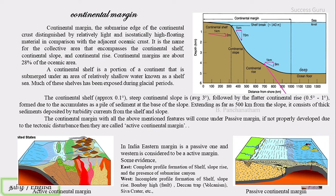A submarine canyon may form during glaciation when a river crosses the continental shelf and runs down the continental slope, forming a U-shaped deep valley. There are many submarine canyons in the Bay of Bengal side of the continental slope. On the western side, there is incomplete formation of the shelf; there are faults at Bombay High, volcanism such as the Deccan Traps, and the Shiva Crater in the Arabian Sea — which has controversy over whether it is of volcanic or meteoric origin. These features indicate that the eastern margin is passive and the western is active.